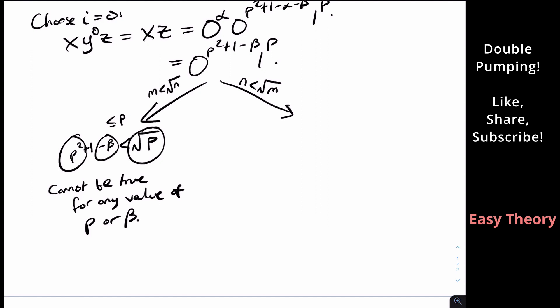Because we've got P squared on one side and square root P on the other. And for the other branch, well, that's saying that P is less than the square root of P squared plus one minus beta. So let's see, well, what does that mean?